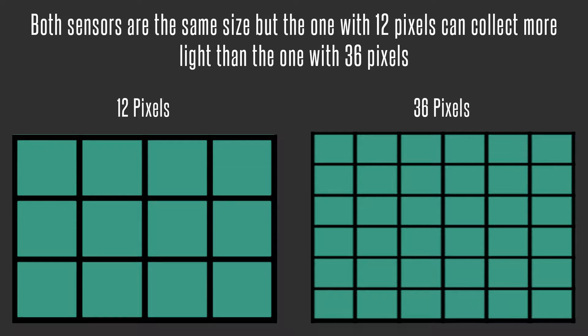Take the Nikon D3s — it's an older model but incredible in low light. It's only 12 megapixels, but it can collect so much light. It's incredible at dark receptions or ceremonies lit by candles, because at 12 megapixels each pixel is bigger and collects more light.